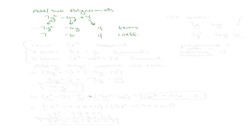Terms are what's separated by the plus and minus signs. Now, 4 doesn't have a variable, so it's just 4. If it's a constant, that constant is the coefficient — just that constant.